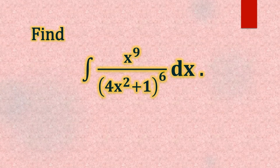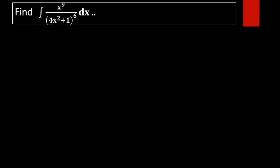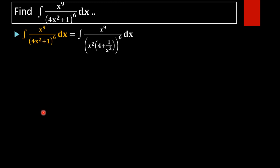Find the integral of x raised to 9 divided by (4x squared plus 1) whole raised to 6 dx. Here we have to find the value of this integral. In order to find the value, we are going to simplify this function first.